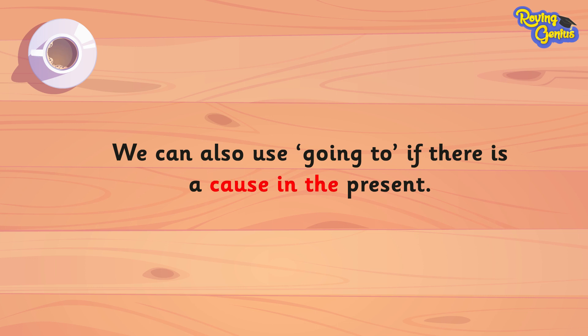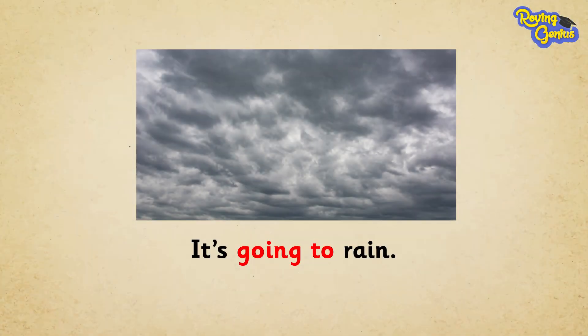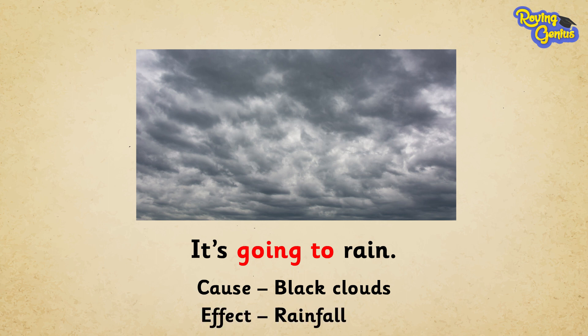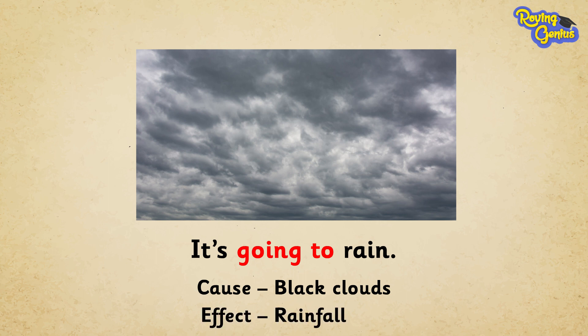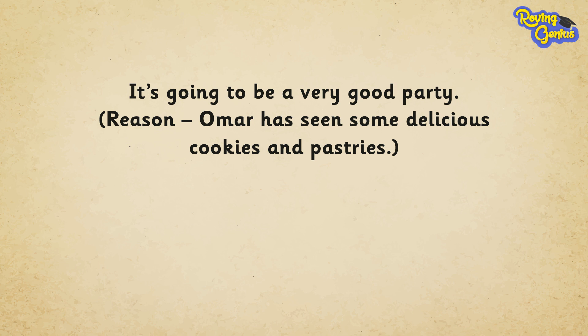For example, 'It's going to rain.' Here it means that we can see the black clouds in the sky; therefore, the black clouds are the cause of the rainfall. Let us see some more examples: 'It's going to be a very good party.'